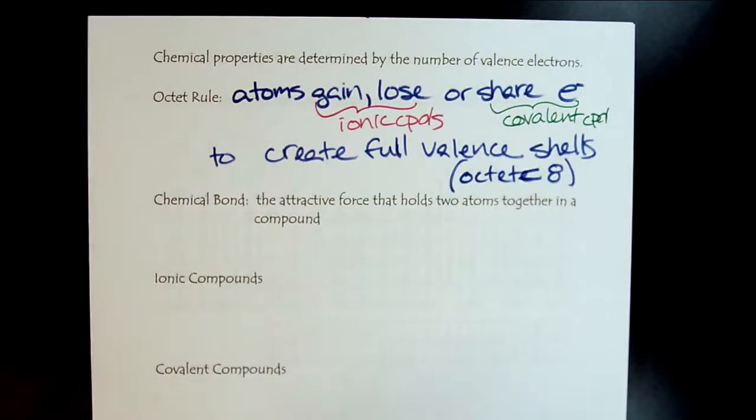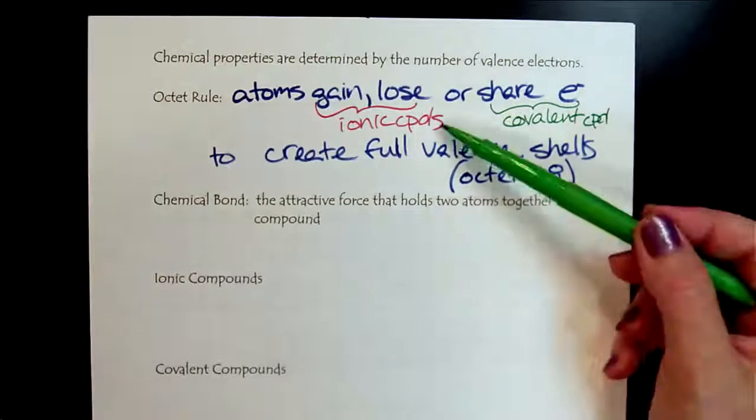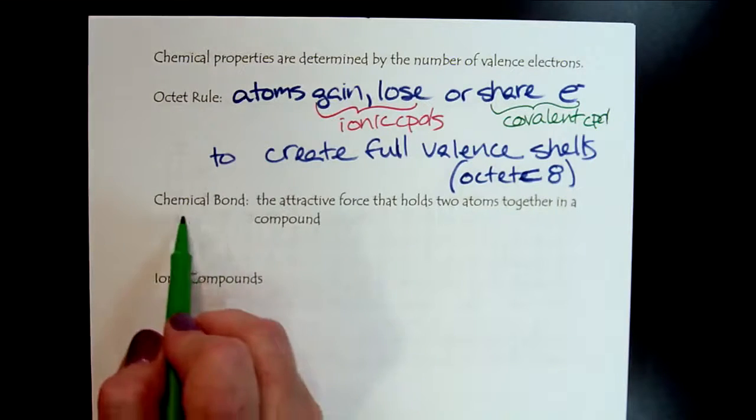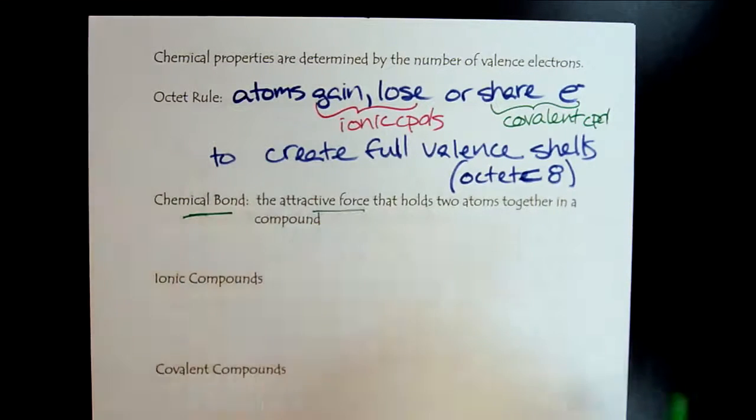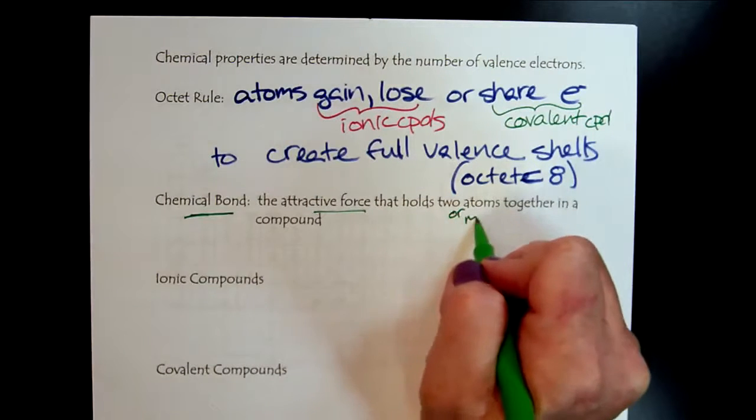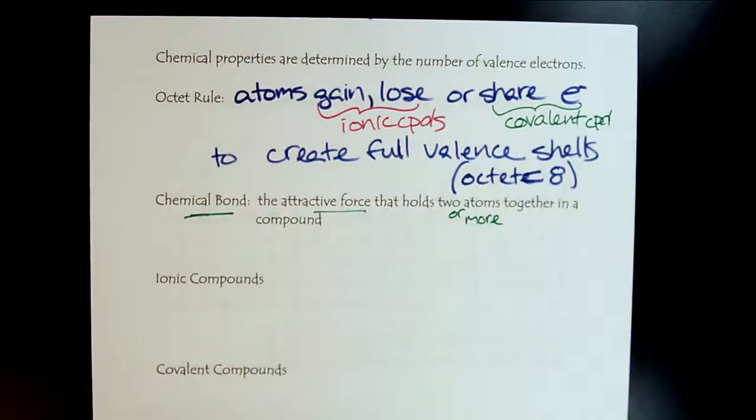We can see that the compound types are determined by the type of chemical bond. And that's the attractive force that holds two or more atoms together in a compound. So let's put this all together.